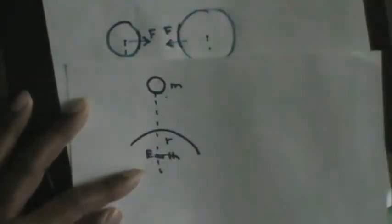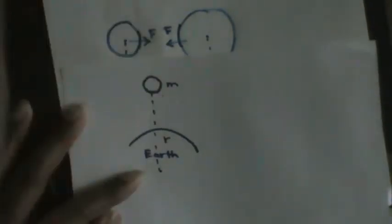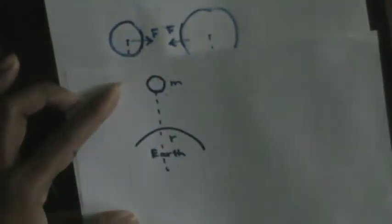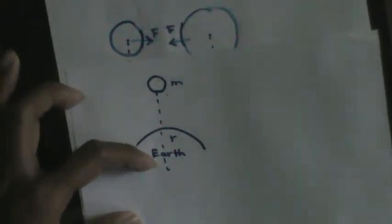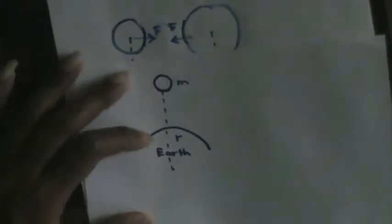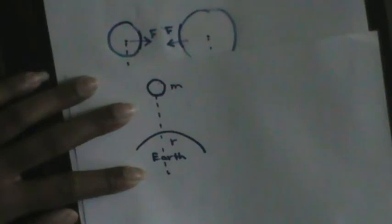Say if you are throwing a ball out into space — I discussed this in the concepts of mechanics — if you are throwing a ball at 50 meters per second, it will go out and there will be a distance between these two points. Compared to the ball, the Earth has effectively infinite mass. I will take the mass of the Earth as capital M to make it easy to describe.